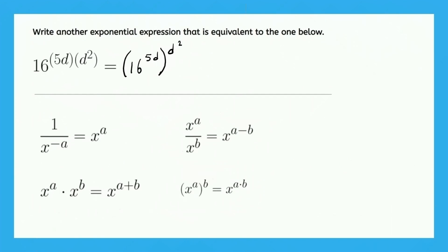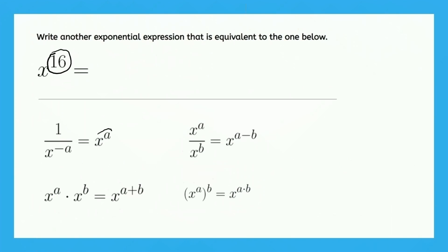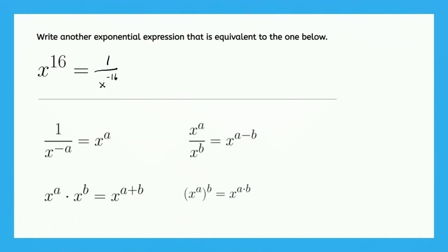So, this very last example is going to be even more fun, I think. Instead of just writing one exponential expression that is equivalent to this, let's try to write a number of different exponential expressions that are still equivalent to x to the power of 16. What we're really going to do here is see how we can rewrite 16 without changing its value. We could think of it like the first property — if x to the a is x to the 16, we could write this expression as 1 over x to the power of negative 16. So, there's one equivalent expression.